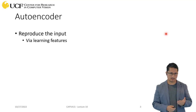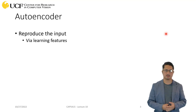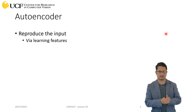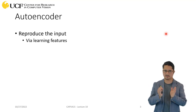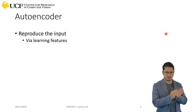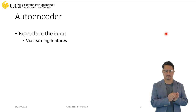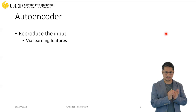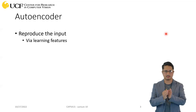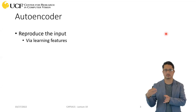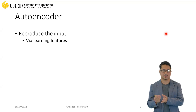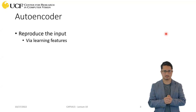The core idea of autoencoder is, as the name suggests, whatever input you have, you learn features from that input. And then you try to reconstruct that input. That's the core idea.